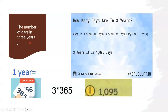The number of days in three years. In one year we have 365 days. How many days are in three years? In three years we have 365 three times — that means 365 multiplied by three.